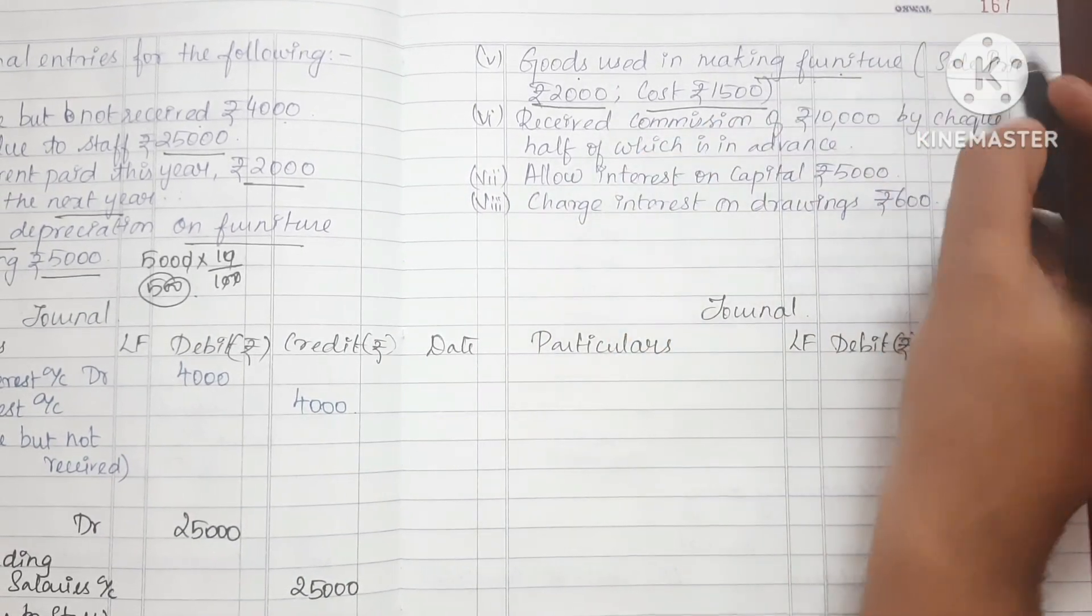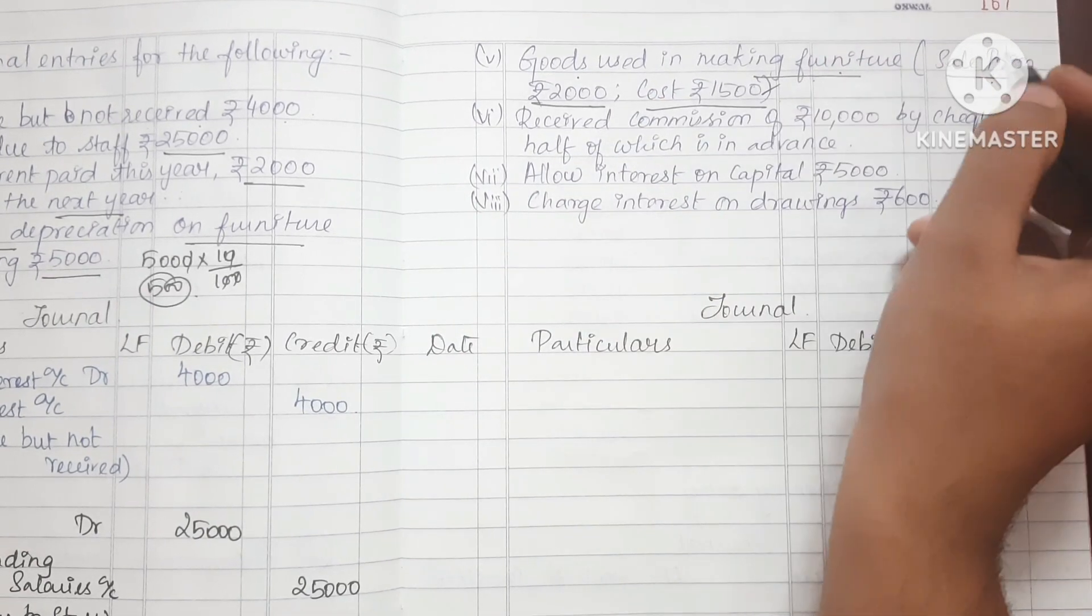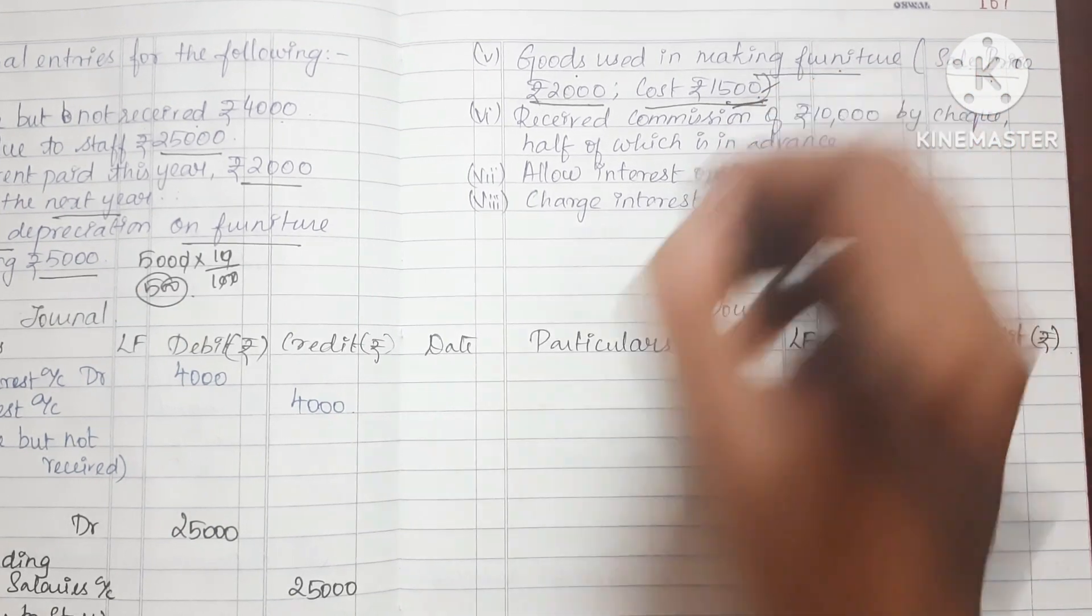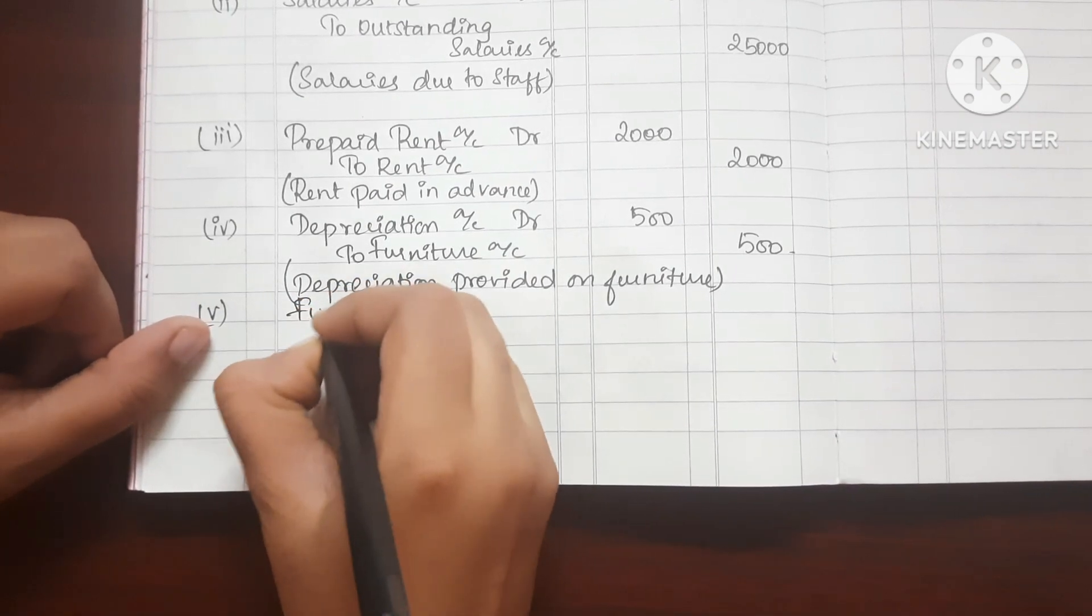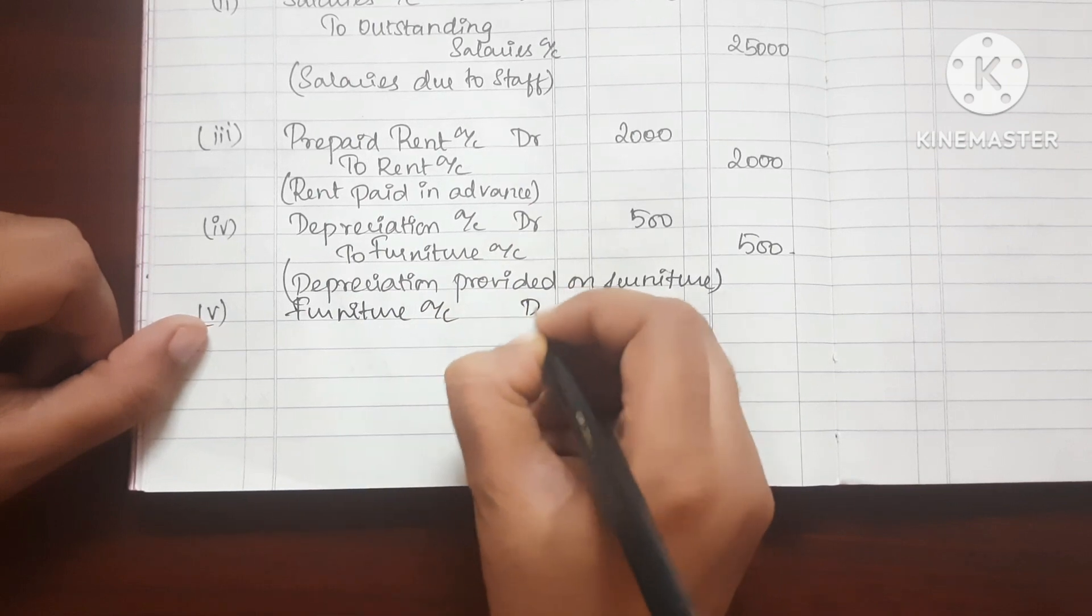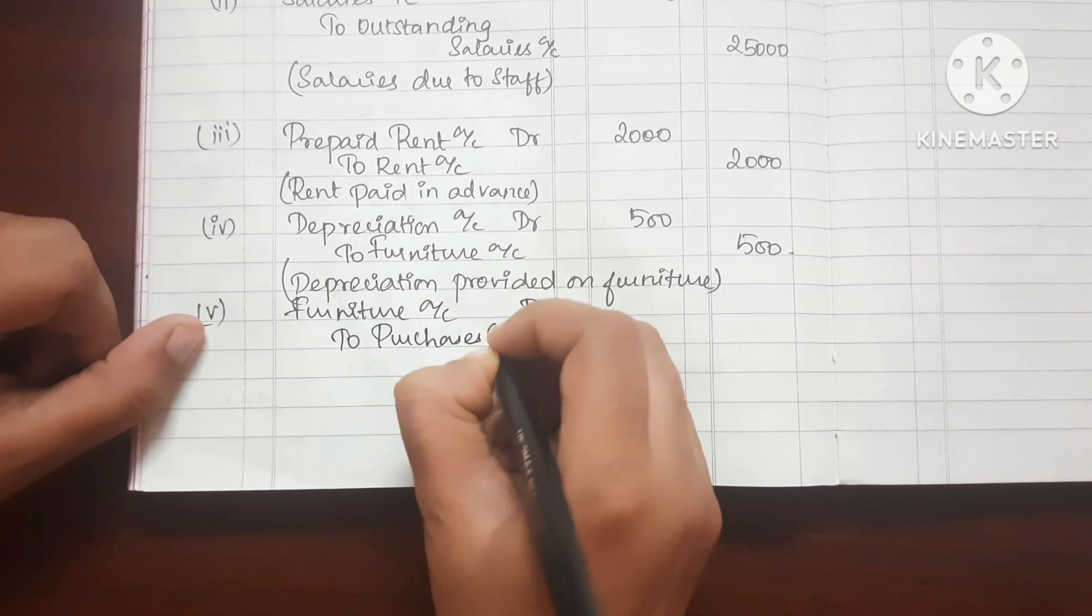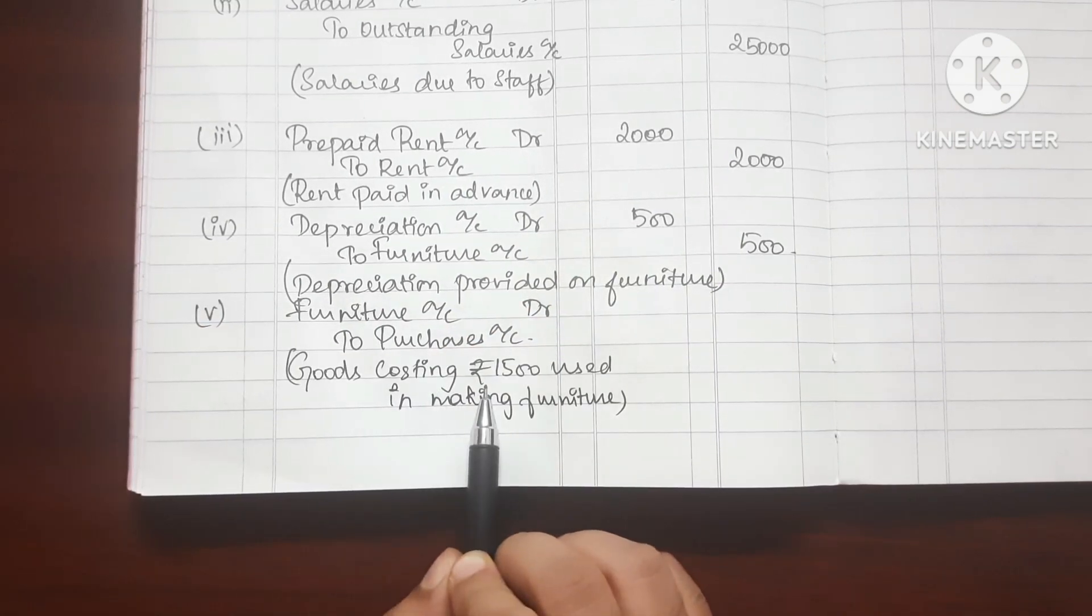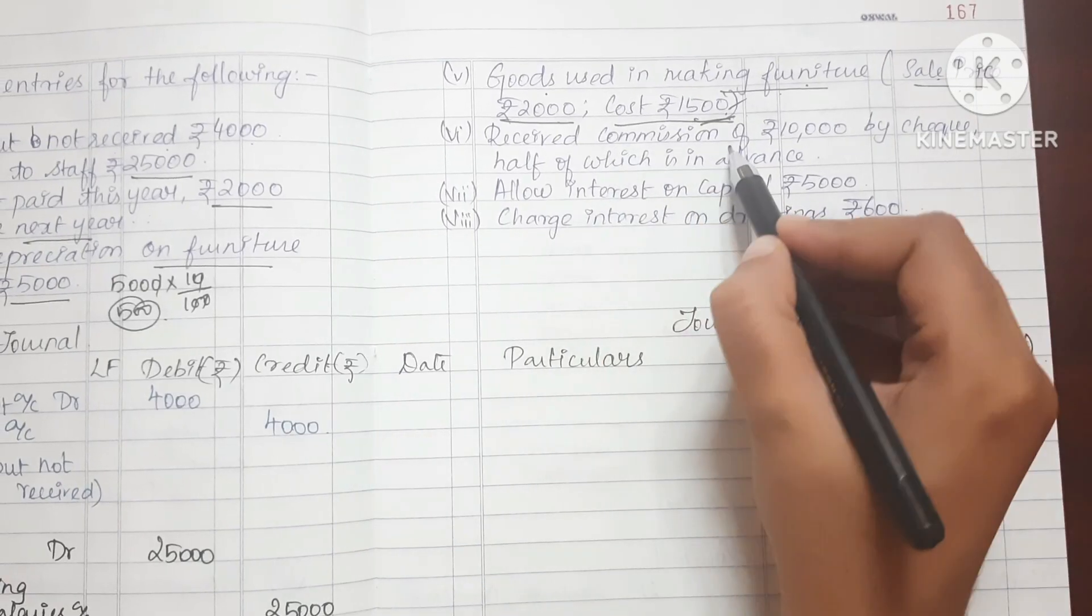Price 1500. Selling price, cost price. Furniture account debit to Purchase Account. Narration: Goods costing Rs.1500 used in making furniture.